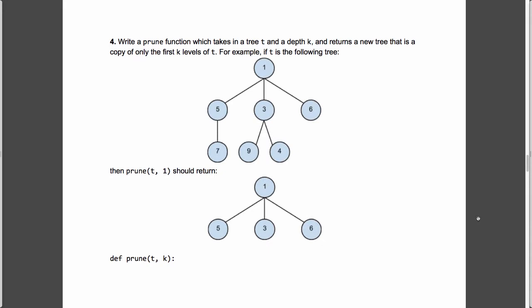This is specifically asking us to write a prune function, which takes in a tree. This is our ADT tree, so our list implementation of trees. And a depth k, and returns a new tree that is a copy of only the first k levels of t. For example, if t is the following tree,